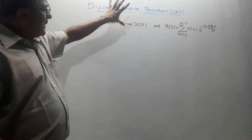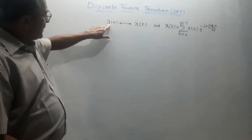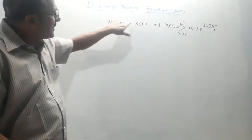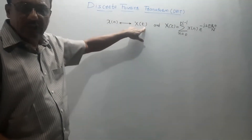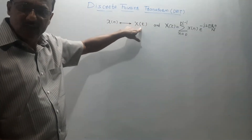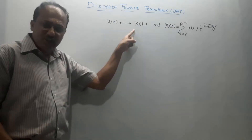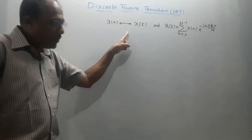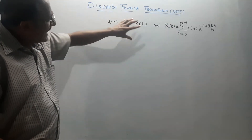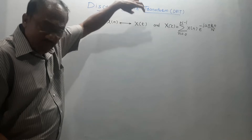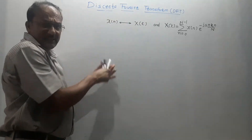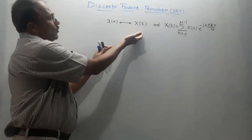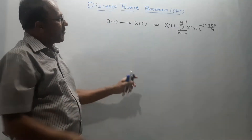The mathematical notation for DFT is X of n. If you have a discrete sequence X of n, its DFT is generated by capital X of K. I have used a bi-directional arrow, which says that you can calculate inverse DFT from this. That means if you have X of K, you can generate X of n and so on.